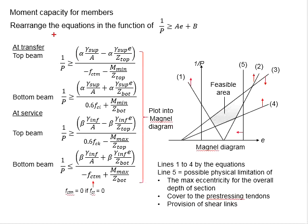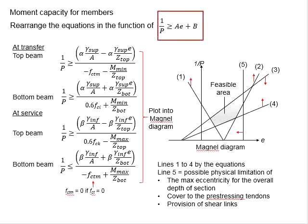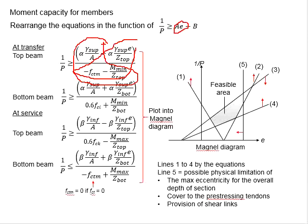Should the full prestressing is being used, the fctm in the equations will be considered as zero. What you see in the equation here is actually in the format of 1/P greater or smaller than Ae plus B. This part will be the Ae and this part will be the constant B.